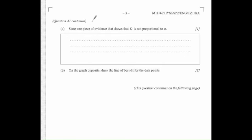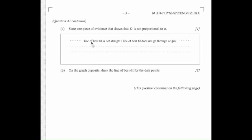And to answer the first point, the evidence that shows D is not proportional to N: you could either say that the line of best fit is not straight, or it's not possible to draw a line that passes through all of the error bars. Or alternatively, there's no line that passes through the error bars and through the origin.